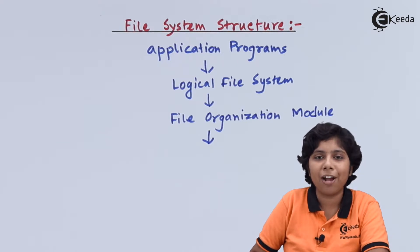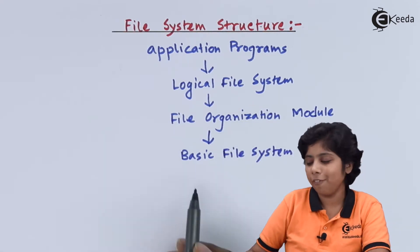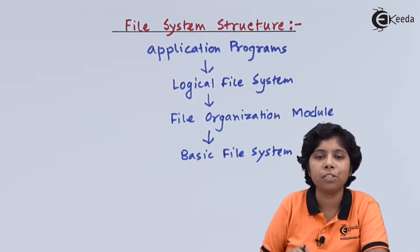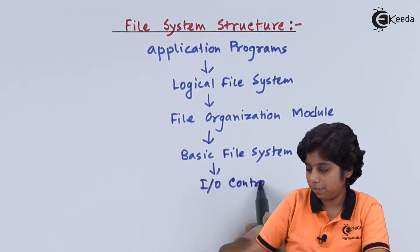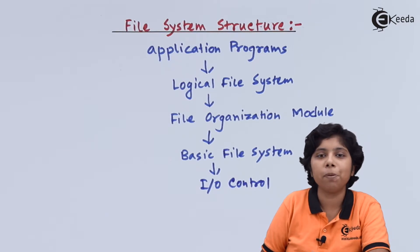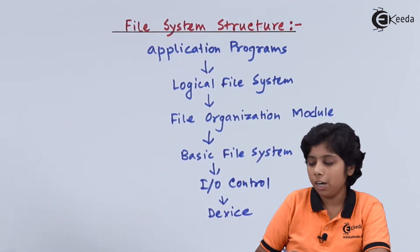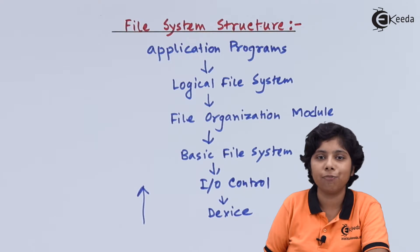The next layer is the basic file system, which deals with the input and output codes of higher levels and produces hardware-level instructions. Below that is I/O control. At the bottom are the devices on which file information is stored on disk. Each level uses the features of the level below it, building higher-level features from lower-level ones.